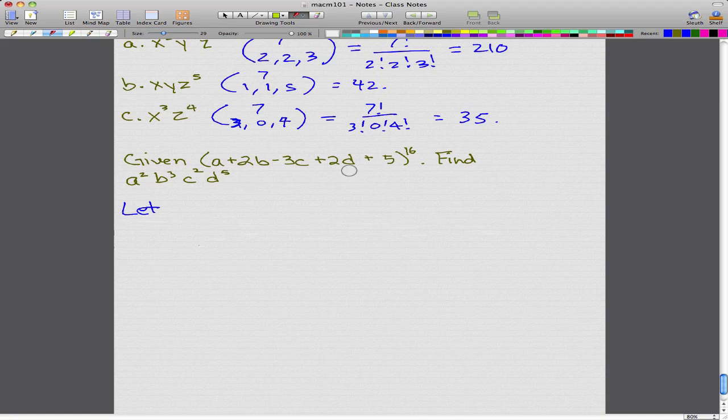In the last video, we left off at this question, and notice that I've changed it from 15 to 5 for this number here. So let's start off by finding a², b³, c², and d⁵.